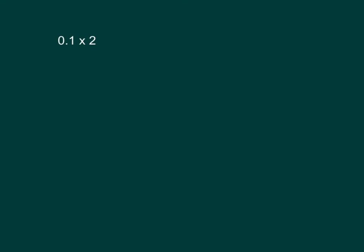Here we have one-tenth times two. Let's write this as a fraction multiplication. One-tenth times two equals two-tenths, written in decimal form as 0.2. So 0.1 times two is equal to 0.2, or two-tenths.